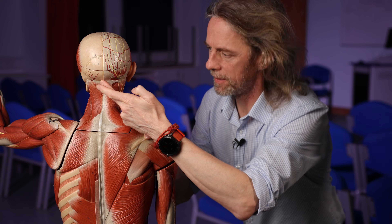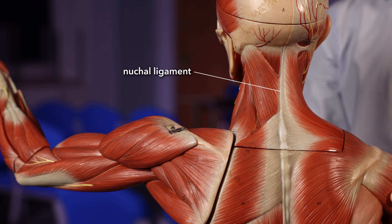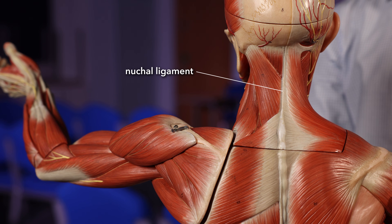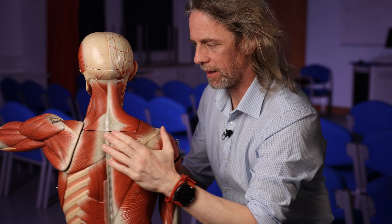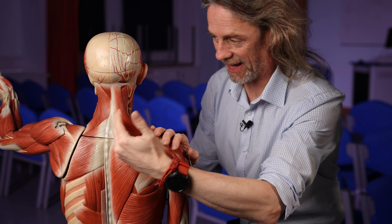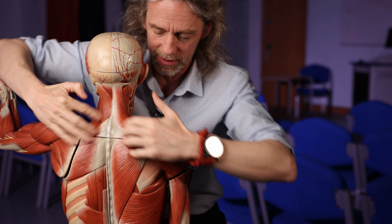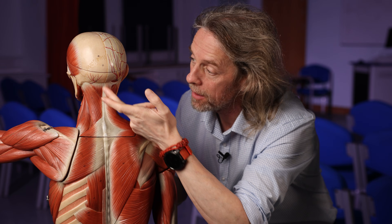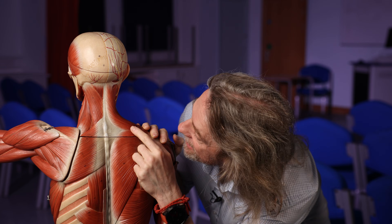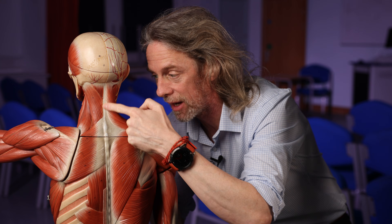Down here in the midline is the nuchal ligament. Your vertebrae are filled in — there's a ligament in there tying them all together, which these muscles can then insert into or have origins from. So the nuchal ligament. And that external occipital protuberance is up here — that's our attachment point.